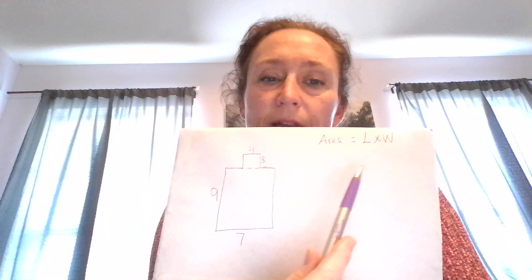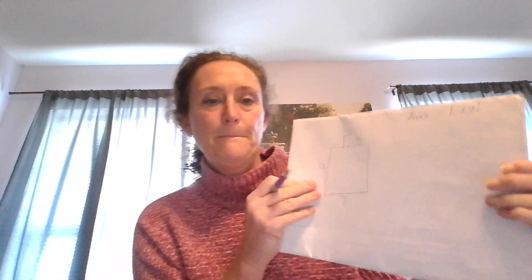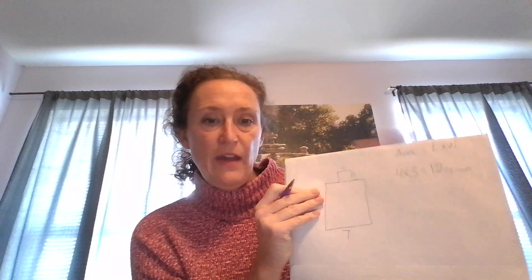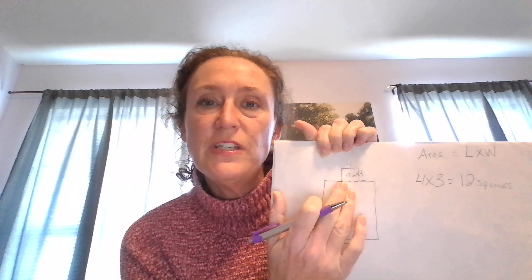Now I would plug that into my equation up here at the top by doing four times three equals 12. And we want to put square units. Something that helps me with this if I have paper is to just put the little 12 units squared up here in this area right here. That way it reminds me I've already done that rectangle and it's time to move on to the next one.